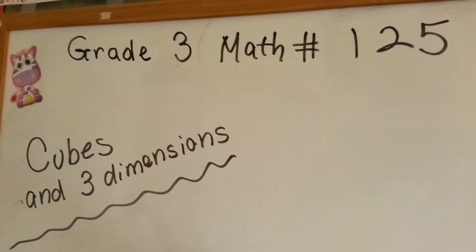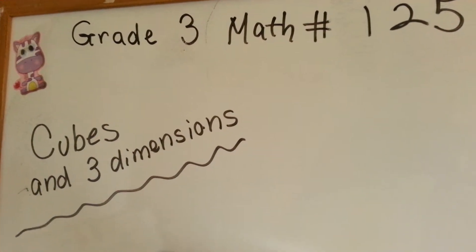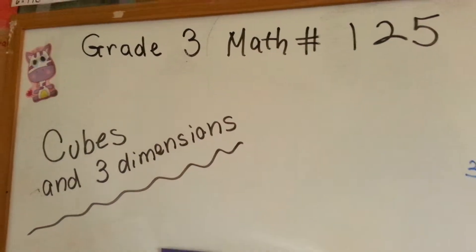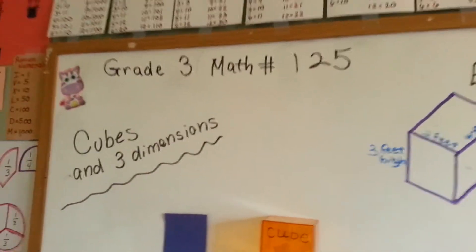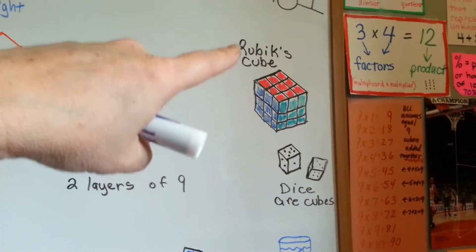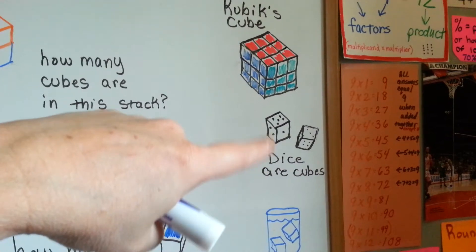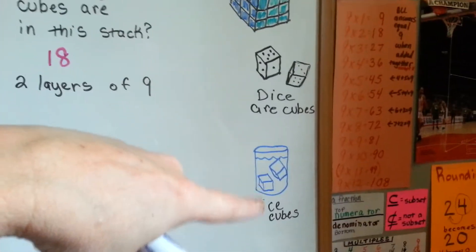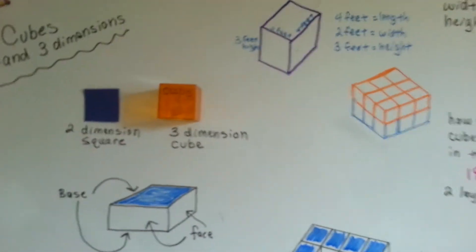Grade 3 math, number 125: Cubes and 3 Dimensions. For the last several videos, I have had these silly things here on the side of my board — a picture of a Rubik's Cube, some dice that are cubes, and a glass with ice cubes in them. And that's because I was building up to this.